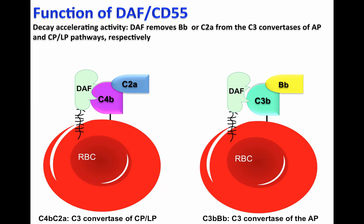These C3 convertases can potentially cleave many molecules of C3, depositing C3b on the cell surface of red blood cells, and eventually may form the membrane attack complex that will lyse red blood cells.